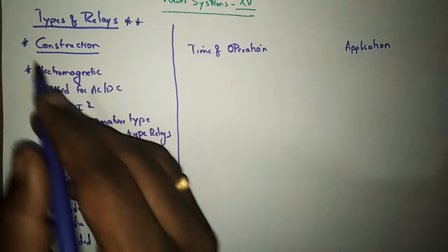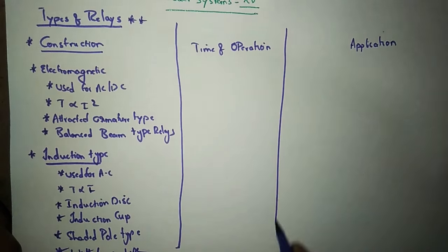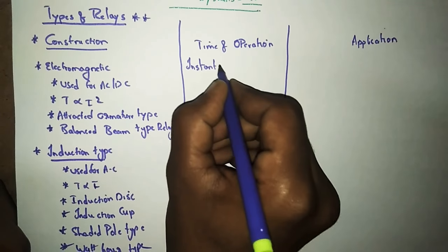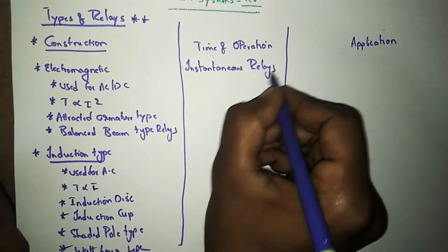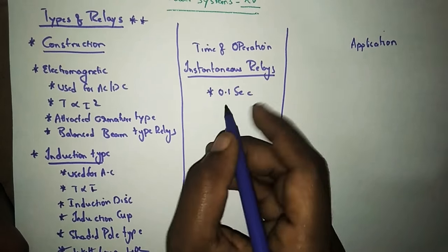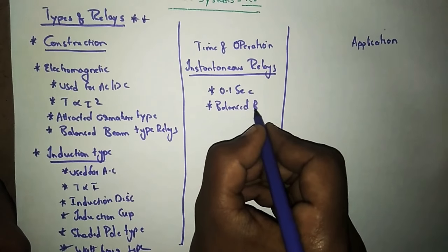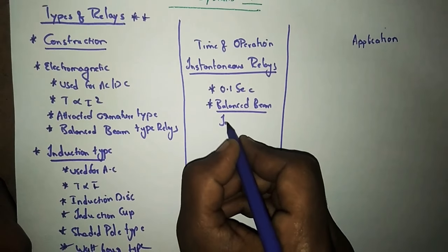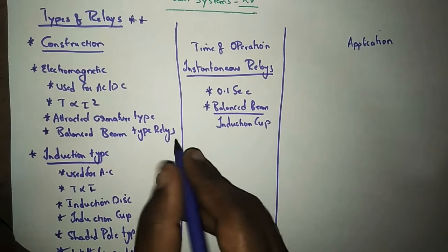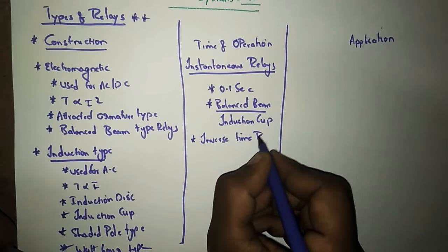These are the different types of relays classified on construction. Next, depending upon time of operation, we have instantaneous relays. These generally have an operating time of less than 0.1 second, and this comes under attracted armature, balanced beam, or induction cup type.